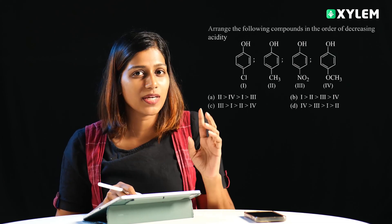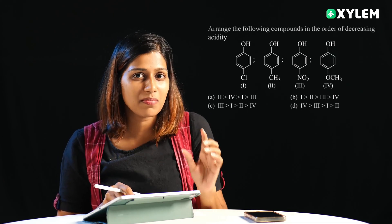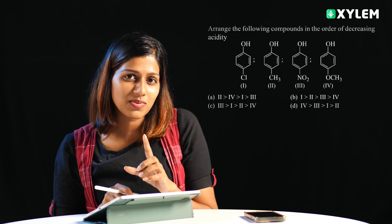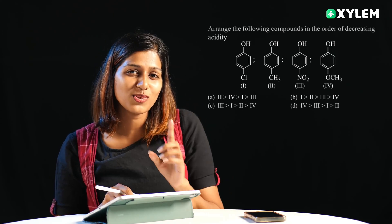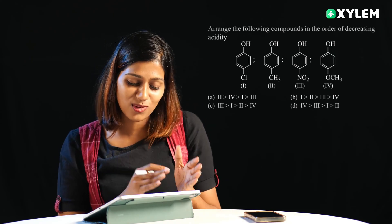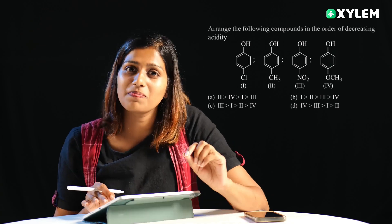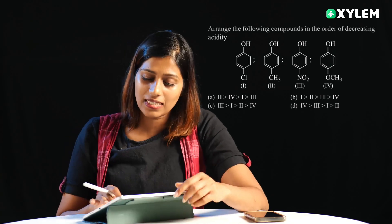If you observe all of these phenolic systems — 1, 2, 3, 4 — with chlorine, CH3, NO2, and OCH3 in the para position.